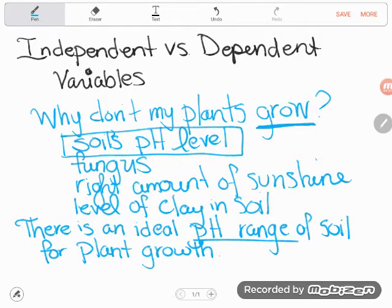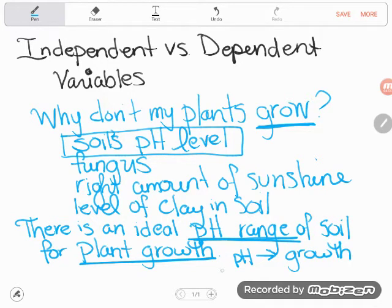I have a pH range that's a variable or a factor here, and I have my plant growth. And what I'm thinking here is that my pH is really what's going to affect the growth. The pH level affects the growth. So when I want to talk about independent and dependent variables, I often will think about that word 'affect'.